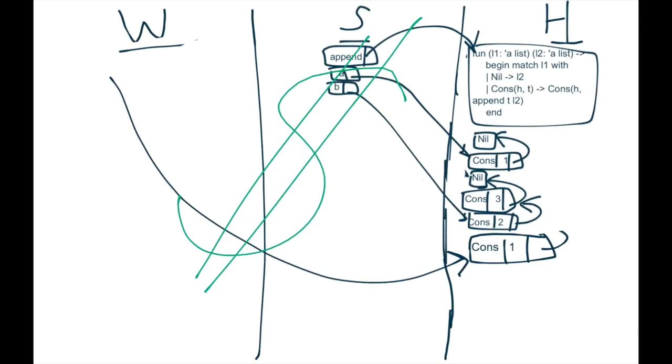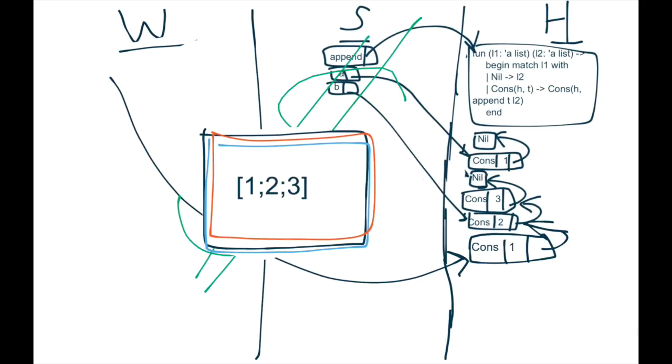The result is just going to be this, this heap structure. Cons one, cons two, cons three, nil. And in OCaml syntax that looks like this. Just the list one, two, three is the result.